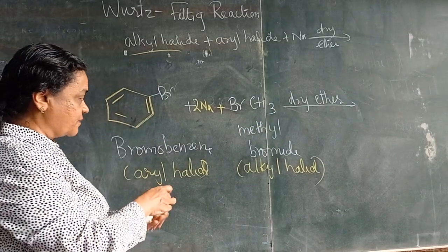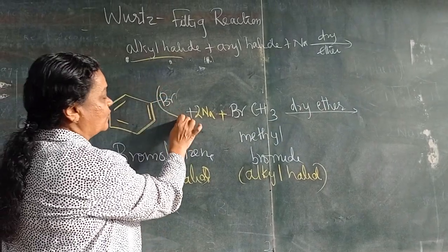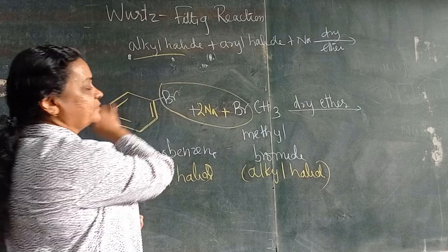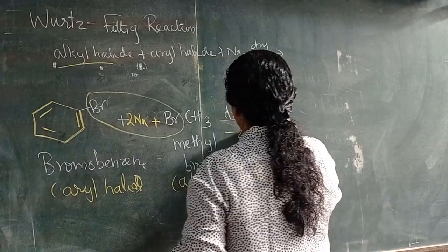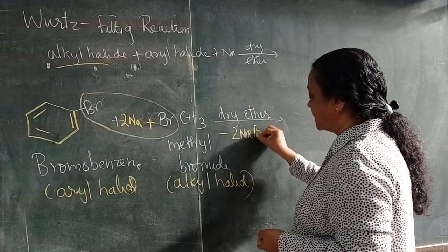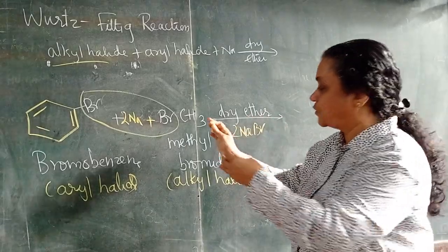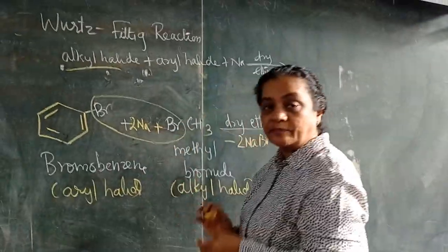Again humko story pata hai, bromide will go with sodium forming NaBr. Hum minus 2NaBr bhi dikh sakte hain, so both the bromides will go with sodium.